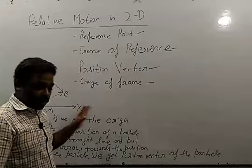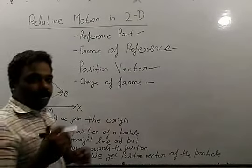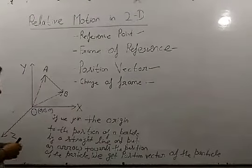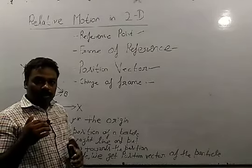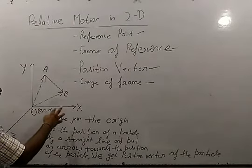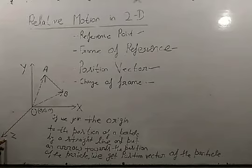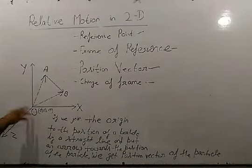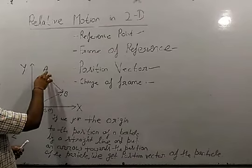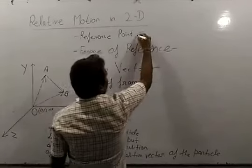First of all, as you know, motion is a relative term — to describe motion we have to take some reference. To specify the position of any point or object we take a coordinate system with x-axis, y-axis and z-axis. Their intersecting point is O, called the origin. If I show the position of point A with respect to O, then O is called the reference point.